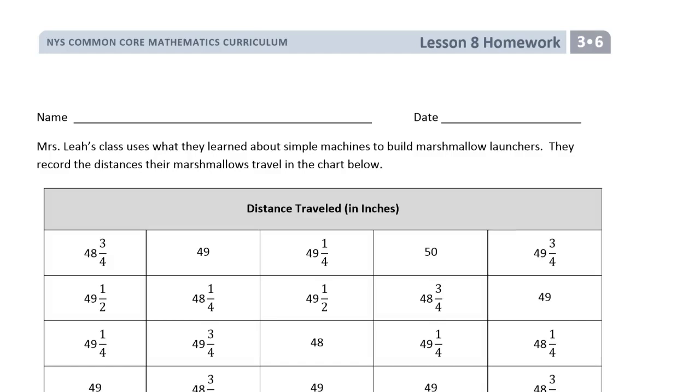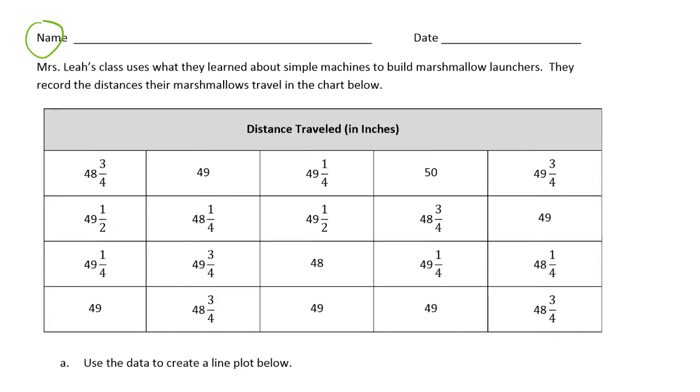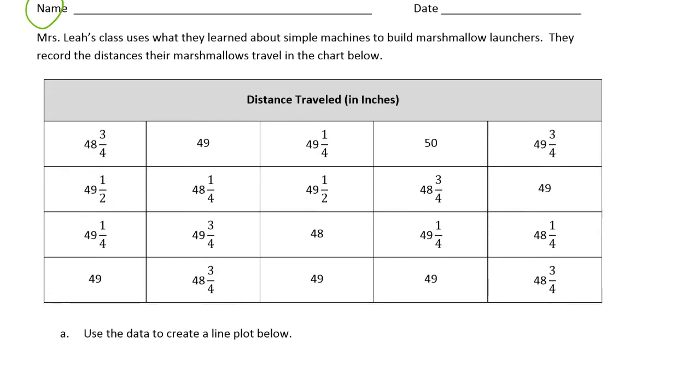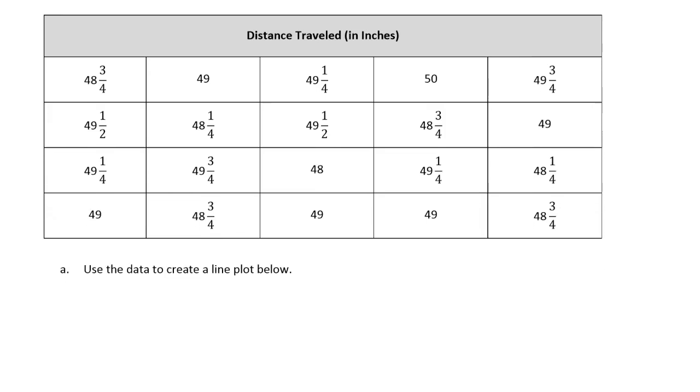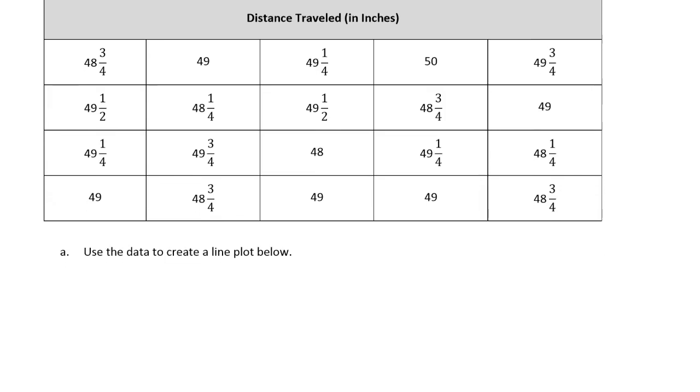Welcome to the homework for Lesson 8. This is Module 6 of Grade 3. Get your name on here first, please, before you do anything else so you don't forget it and you get credit for your homework. Mrs. Leah's class uses what they learned about simple machines to build marshmallow launchers. They record the distances their marshmallows travel in the chart below. Use the data to create a line plot below.